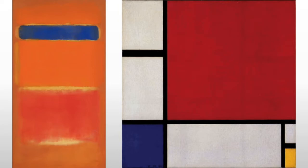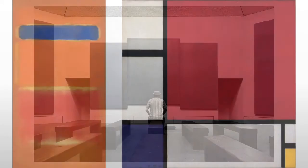Rothko is a color field painter, placing him on the other half of abstract expressionism — looking at color field as opposed to gestural abstraction. He's following a similar path to ideas we've seen from Kandinsky, looking for the universal, as well as ideas from De Stijl and Mondrian.